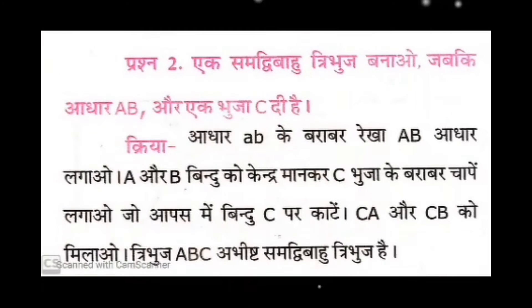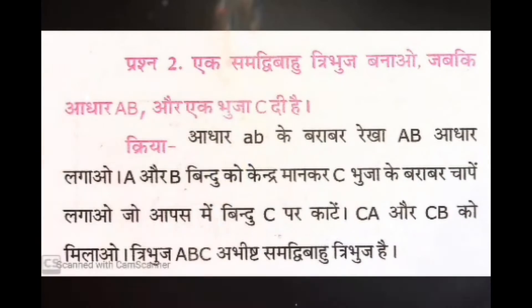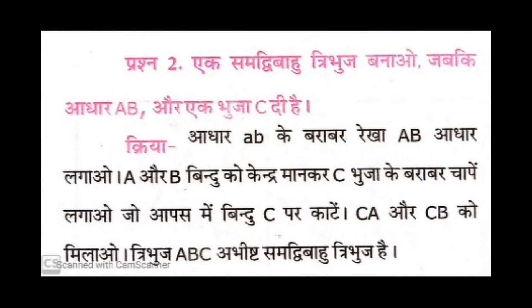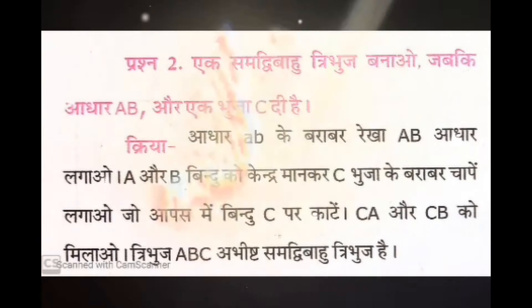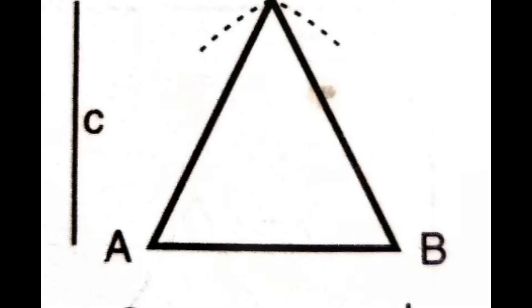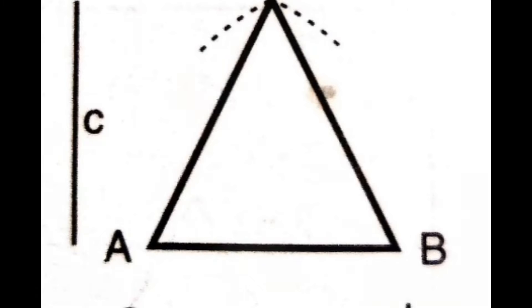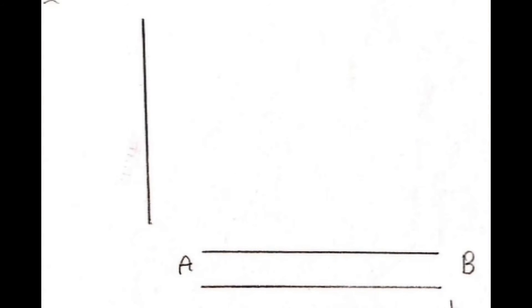Now see question number two, page number 80: draw an isosceles triangle where the base is AB and one side is CD. The length of the lines is not mentioned, so you can draw lines according to your choice — four centimeters, five centimeters, or six centimeters.